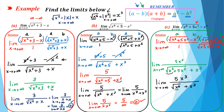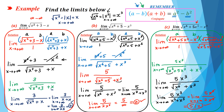So it will be: limit of 5x to the power 3 divided by x to the power 3 plus x to the power 3, when x goes to positive infinity. Now x cubed plus x cubed equals 2x cubed, and in the numerator we have 5x cubed. Cancel x cubed with x cubed and you will get 5 over 2, and this is the answer of part c. And that's it, thank you.